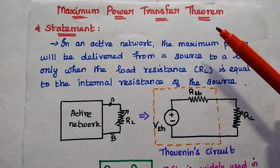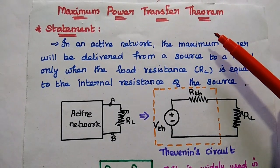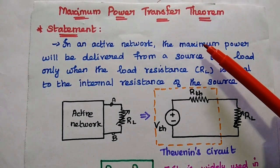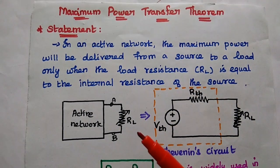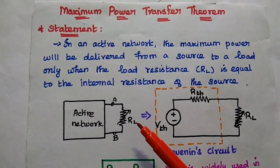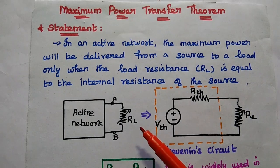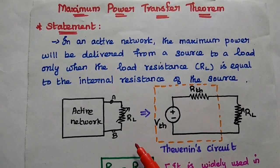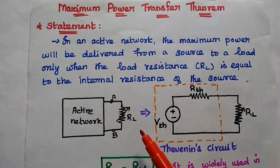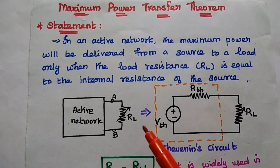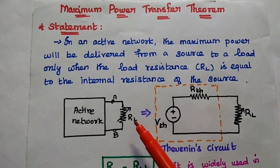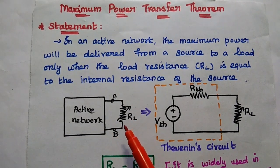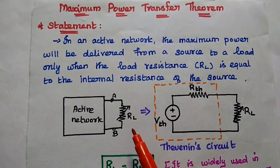Dear students, now we are going to discuss maximum power transfer theorem with its proof in detail. In any electric circuit, the output can be taken from the load resistor. Maximum power will be delivered from a source to the load only when the circuit is perfectly matched — that is, when the load resistor is equal to the internal resistance of the circuit.